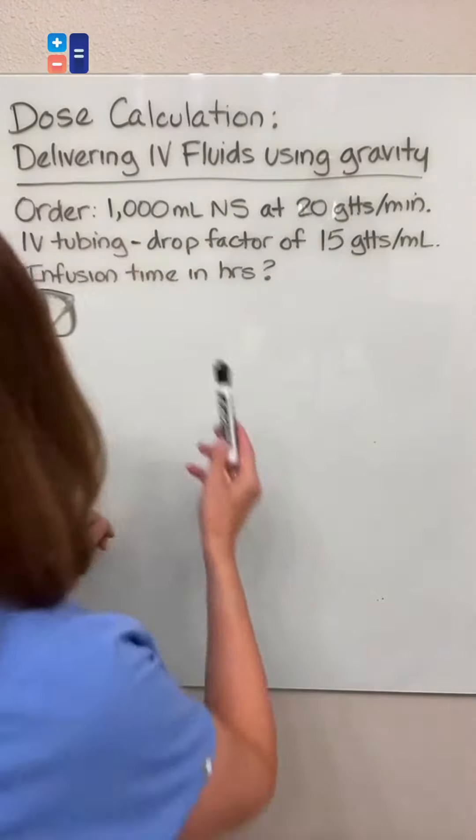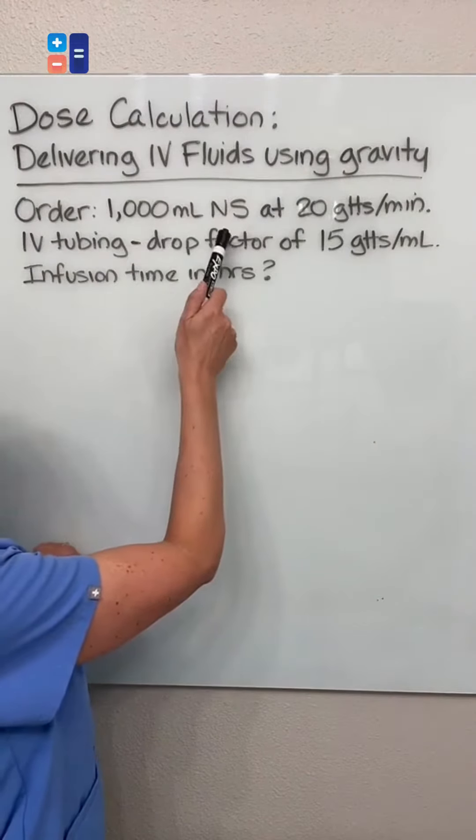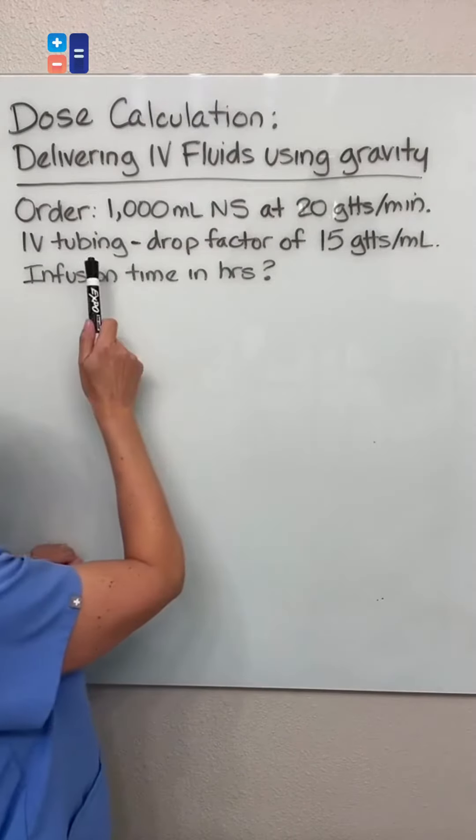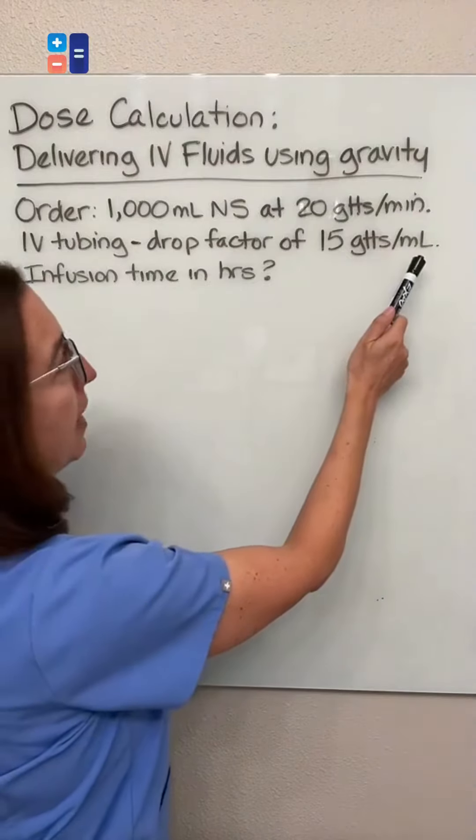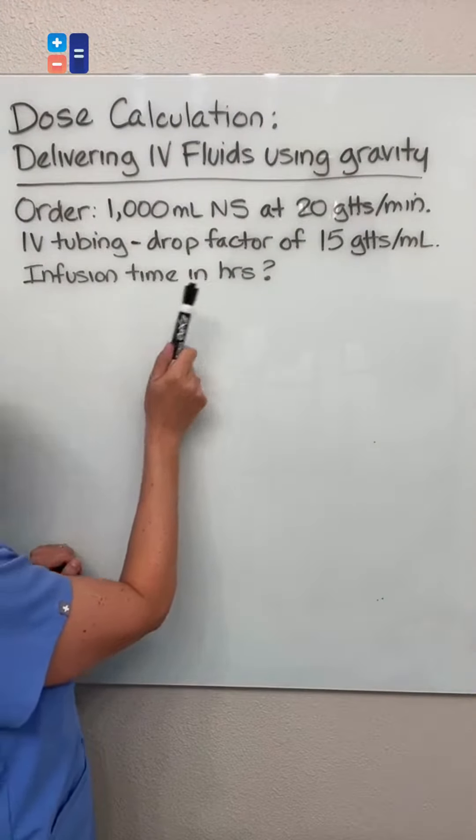In this problem, we have an order to administer 1,000 mL of normal saline at a rate of 20 drops per minute. Our IV tubing has a drop factor of 15 drops per mL, and we need to figure out what the infusion time will be in hours.